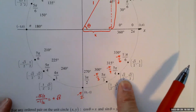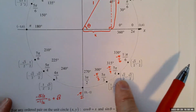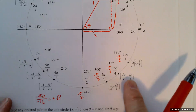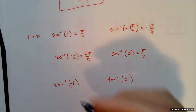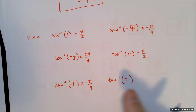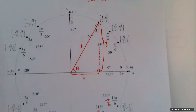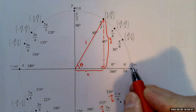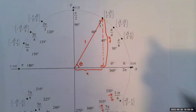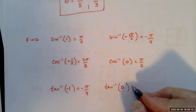Tangent inverse of 0: tangent equals 0 when sine is 0 and cosine is 1 — that's 0 divided by 1, which is 0. We're at 0 radians, so tangent inverse of 0 equals 0. You should be able to use the unit circle to do problems like this.